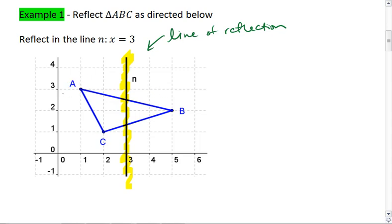What happens then is A gets reflected to the opposite side. So since A is two spaces away right now, it's also going to be two spaces away, which puts it at 5, 3. And we're going to label this A prime.